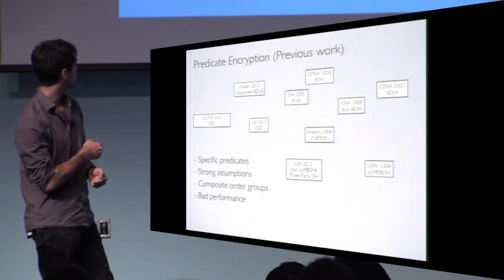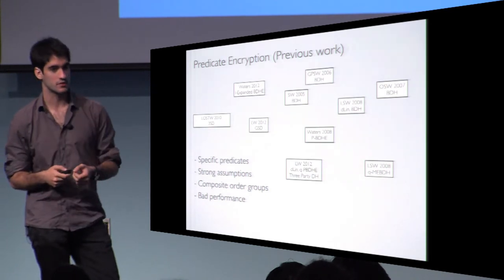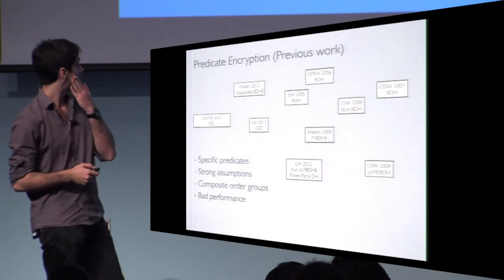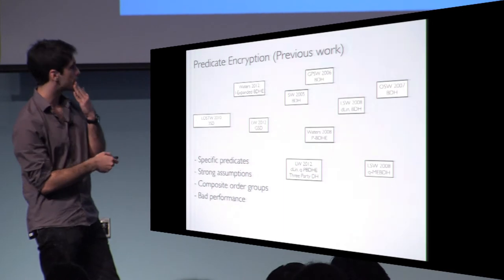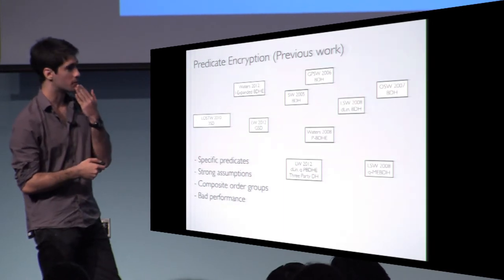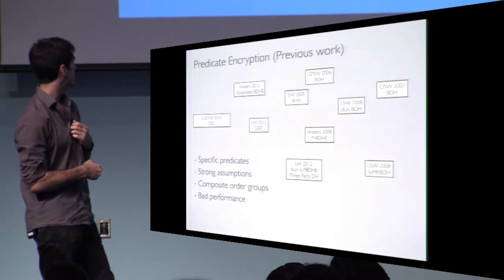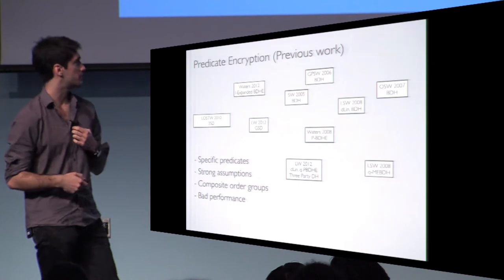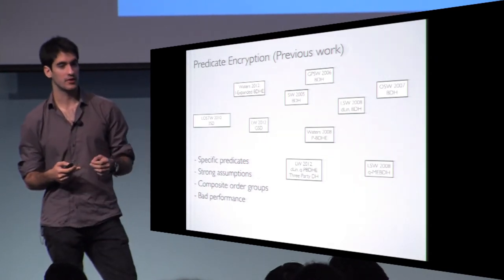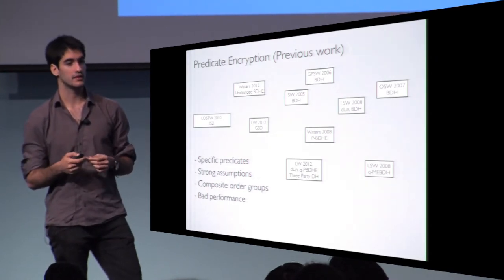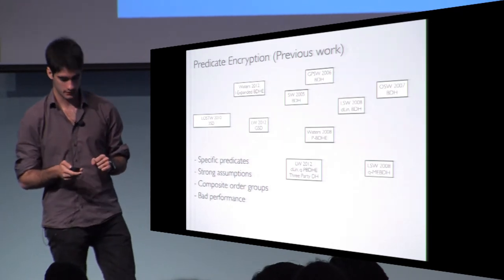Other works use very strong assumptions. Another problem is composite order groups: they use composite order groups that are not so efficient and usually have bad performance. For example, you may need several group elements to encode a very small policy.